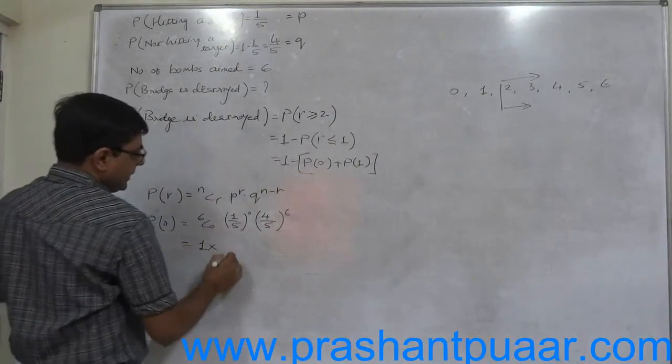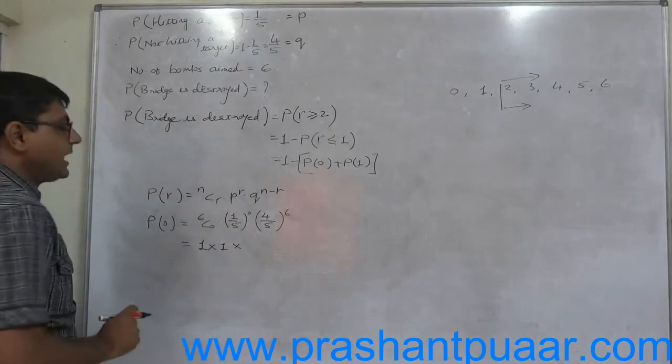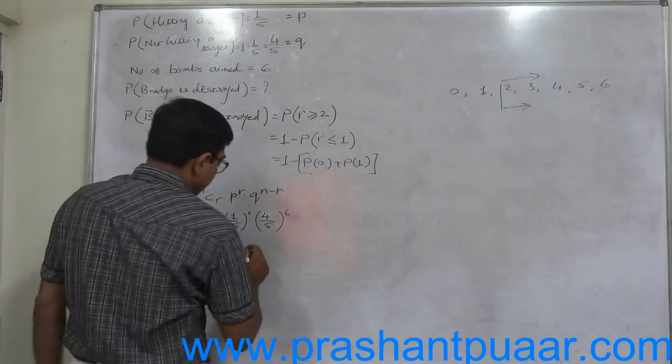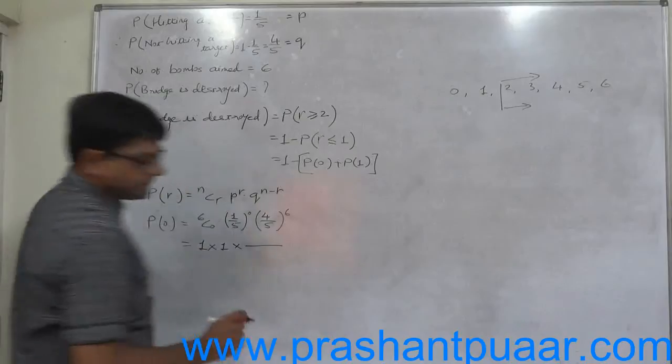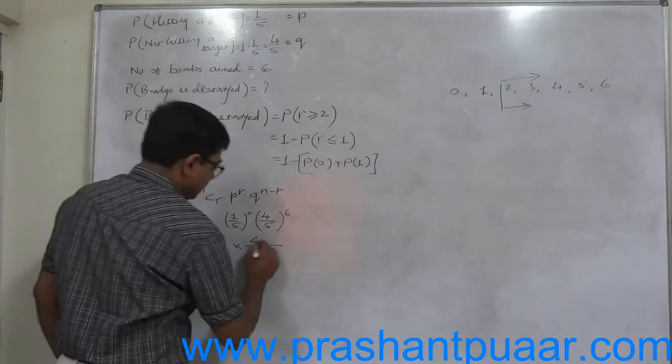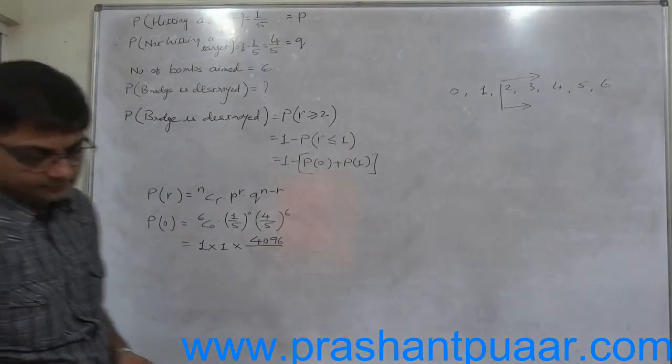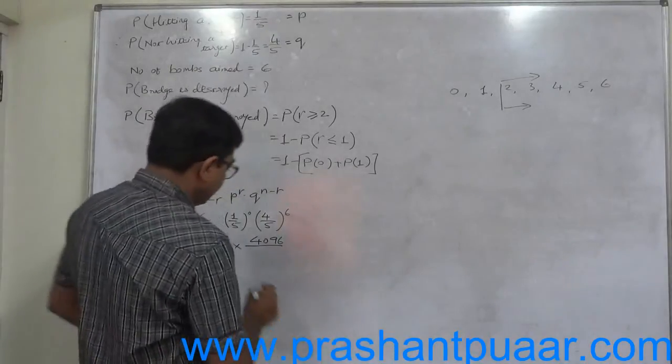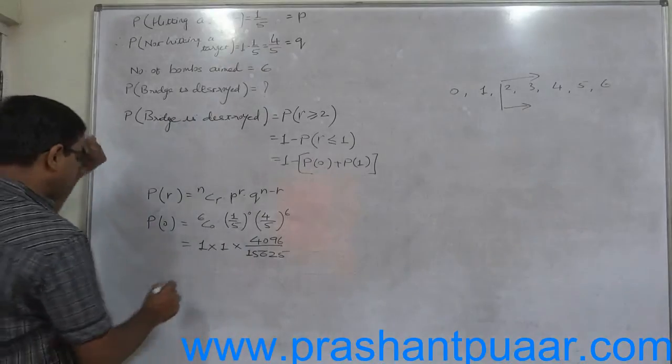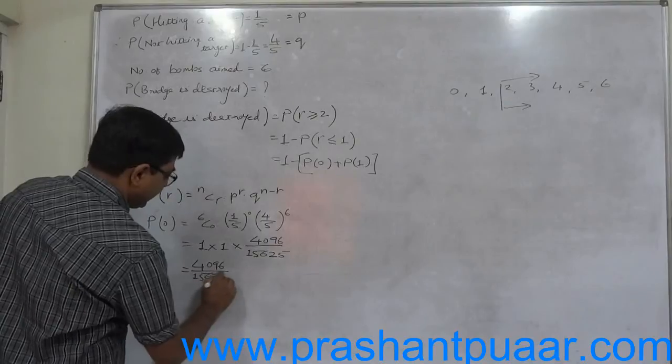6C0 is 1. Anything raise to 0 is also 1. Now 4 by 5 raise to 6. 4 raise to 6 as well as 5 raise to 6, what is the result? 4 to 6 is 4096, and 5 to 6 is 15625. So this becomes the answer 4096 divided by 15625.